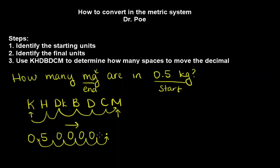So our answer is, so this 0.5 kilograms is the same thing as a five with five zeroes after it, or 500,000 milligrams.